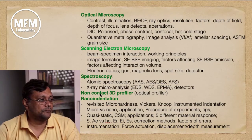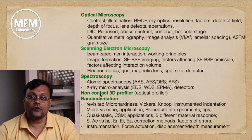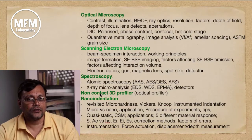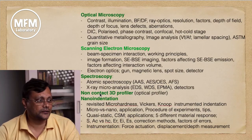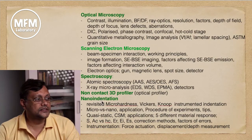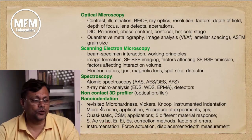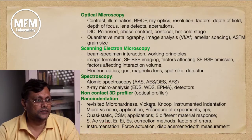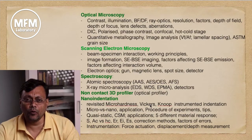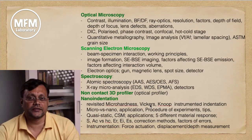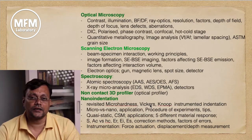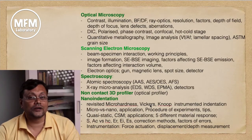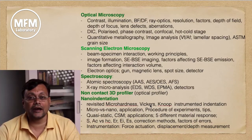Important aspects also include understanding the roughness on your sample surface, which can be done using a 3D profiler or optical profiler. For nano-indentation, we will revisit micro hardness techniques like Vickers and Knoop, which are very old but important in today's context of materials characterization. The instrumented indentation technique was developed much earlier than nano-indentation; understanding the differences between micro-indentation and nano-indentation is a very common question in job interviews.